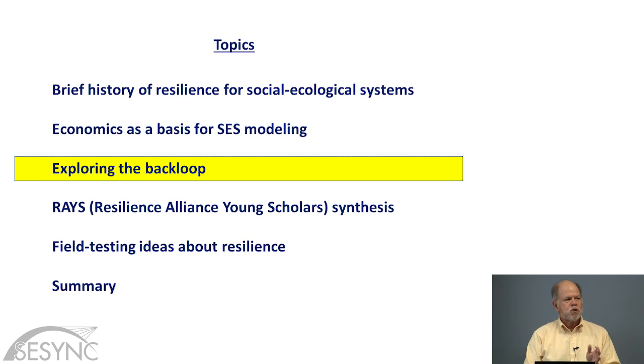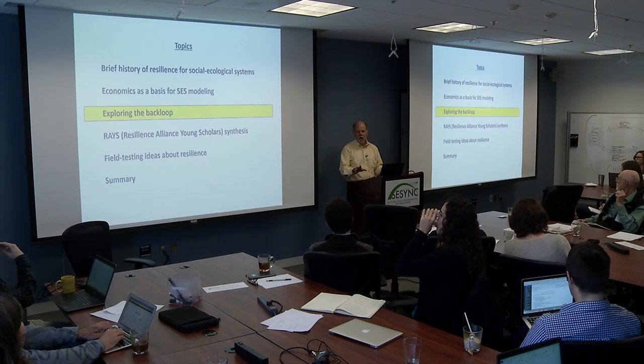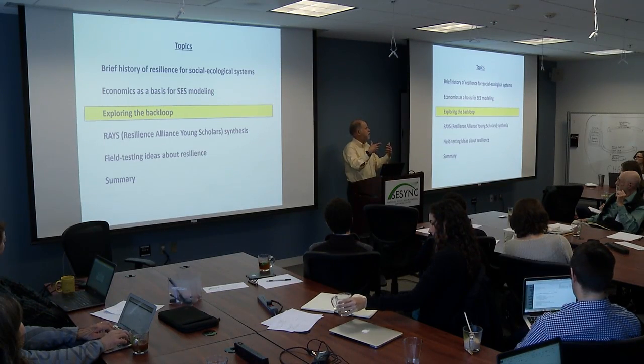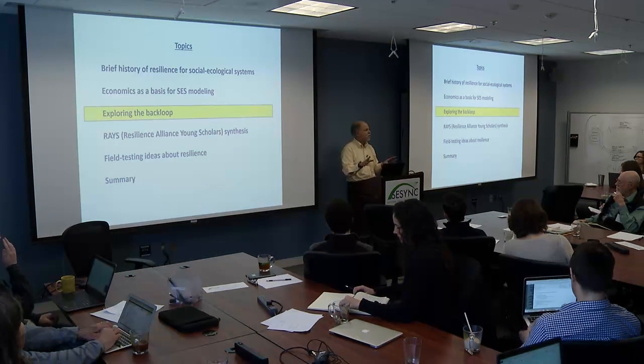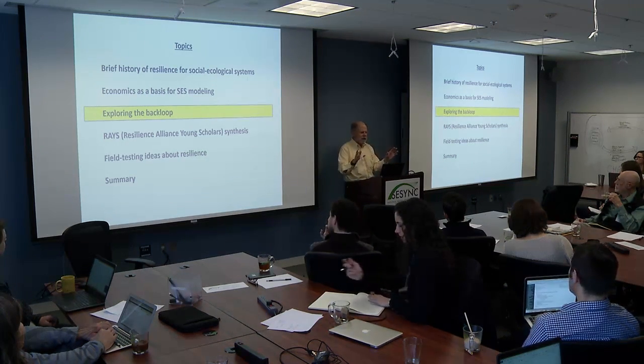As a result of this work, we really began to center our thinking on the back loop. It seemed like we had pretty good models for normal development and growth — ecologists and social scientists had been thinking about that for a long time. It was the dynamics of collapse and the dynamics of recovery and reorganization following collapse that we had a poor understanding of, actually both in ecosystems and in social systems.